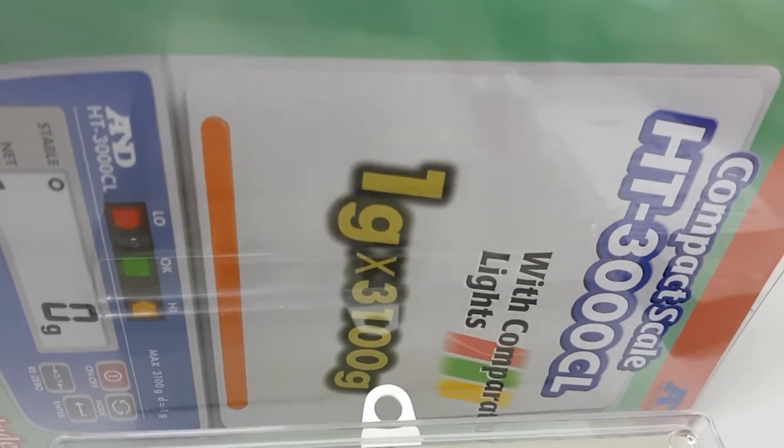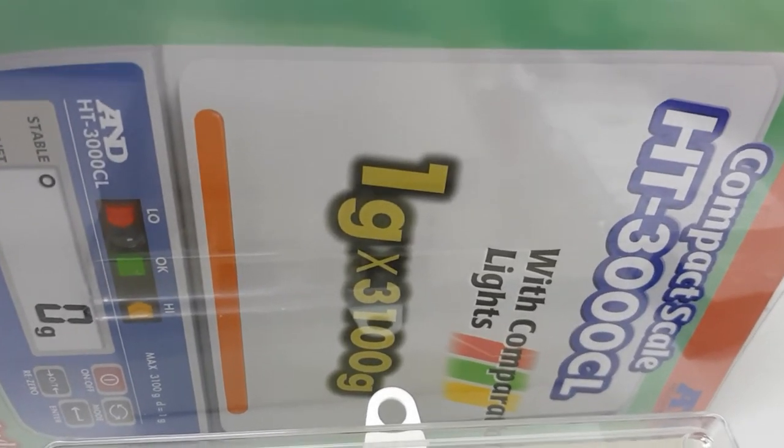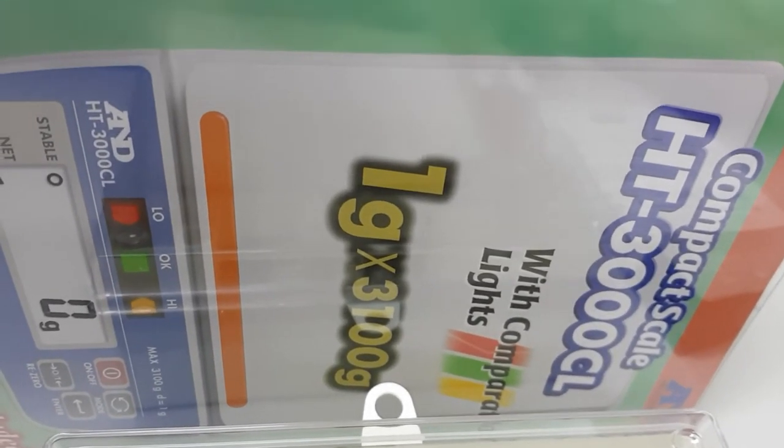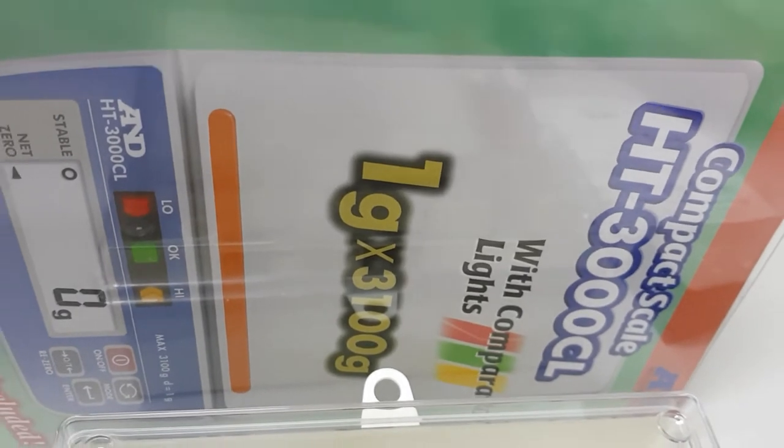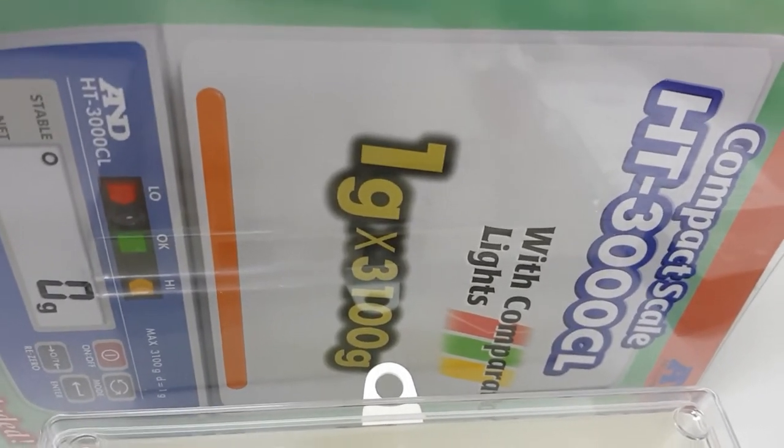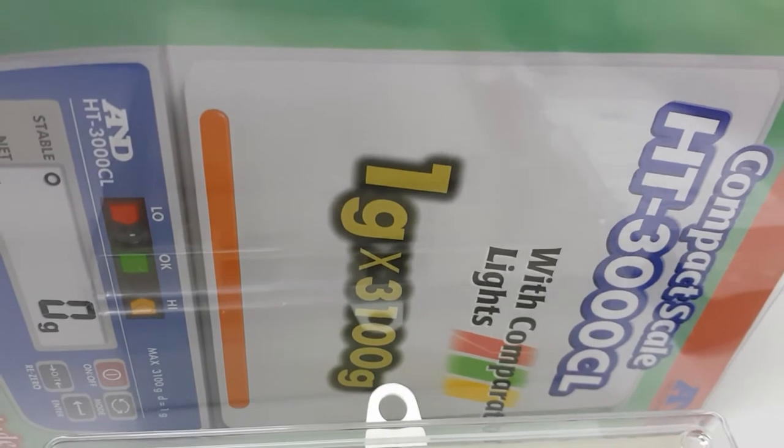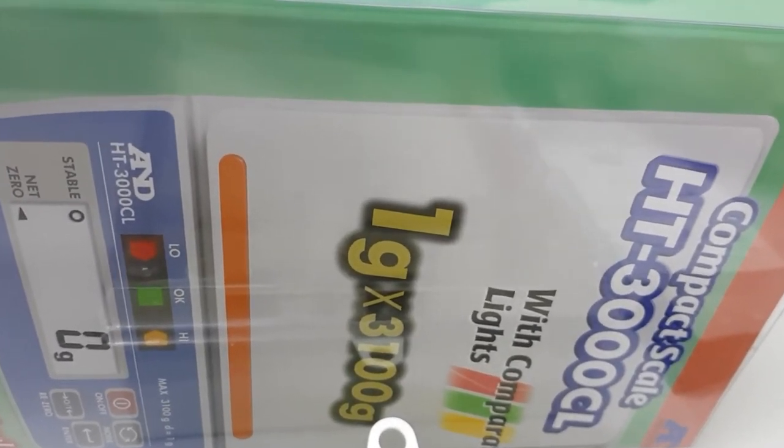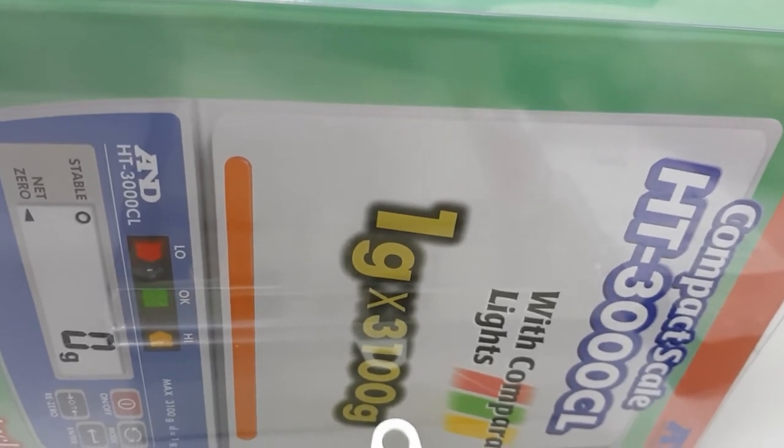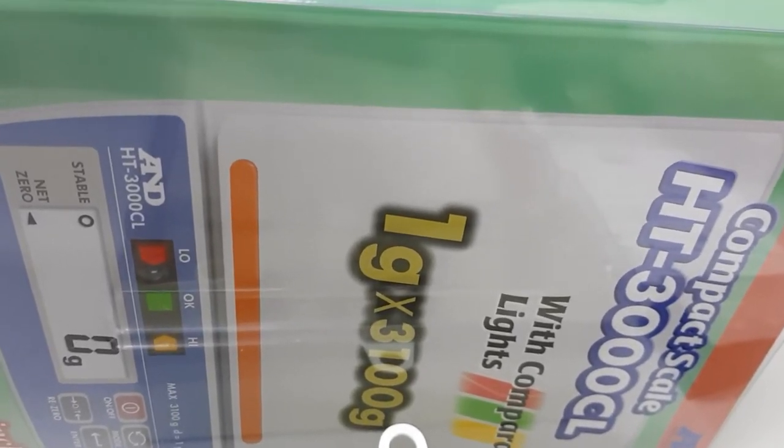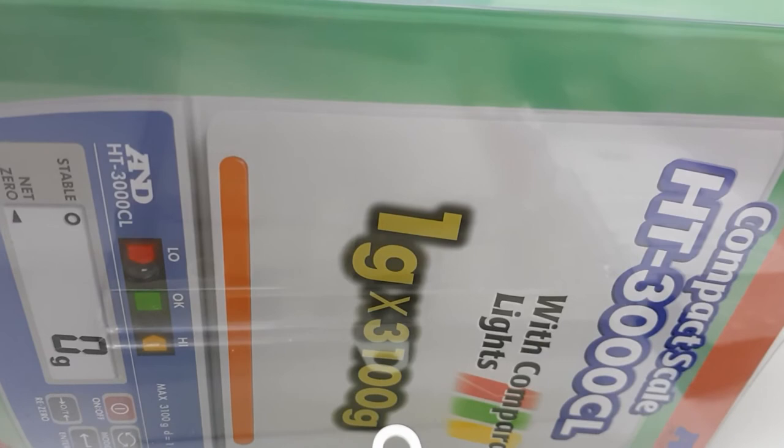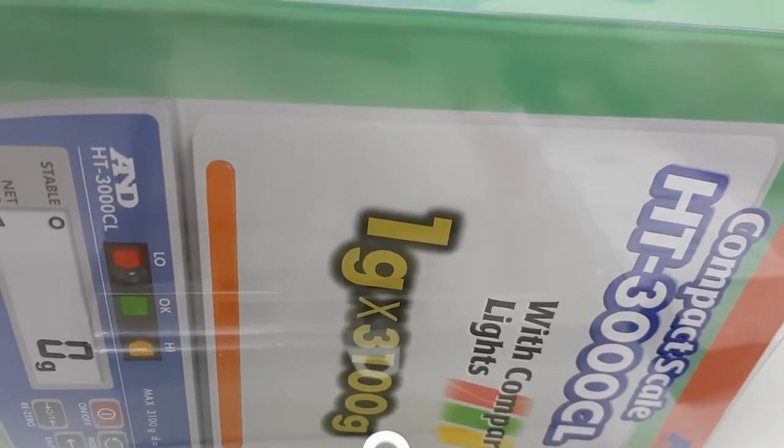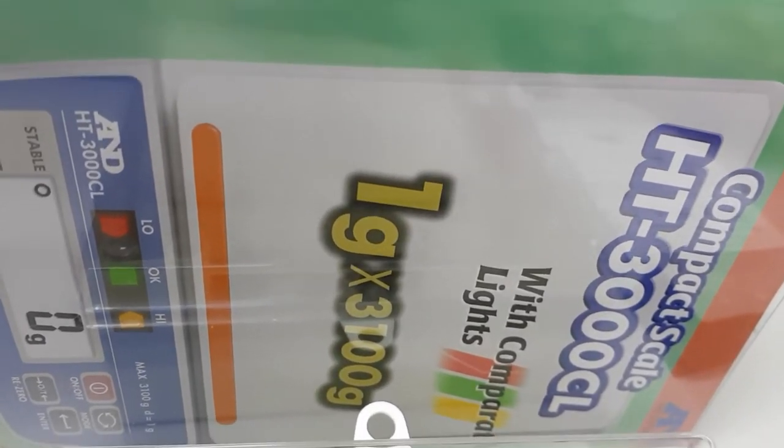These are used primarily for manual packing operations, especially for example strawberries, raspberries, blueberries where product has to be packed manually because it's very valuable and fragile. The key here is you've got a traffic light system to reduce overfill. If it ain't green it ain't right, so you don't want any red lights for underweight and you certainly don't want any orange lights for overweight which is basically profit going out of the door of the packing shed.